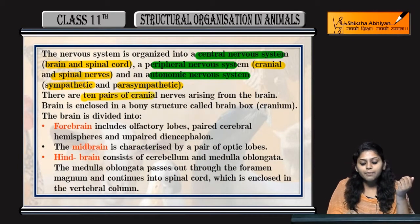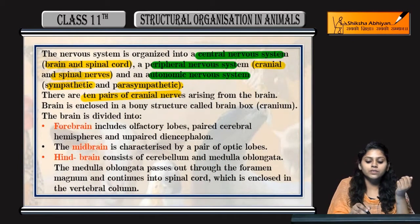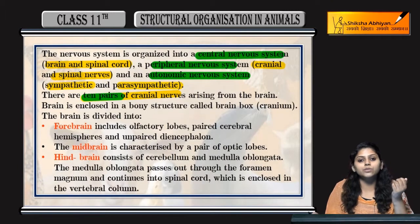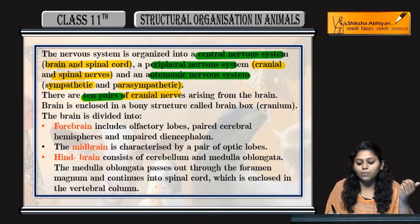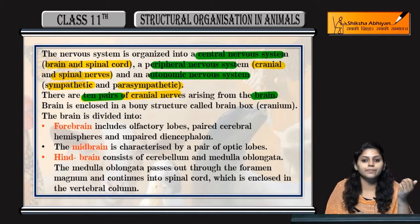There are 10 pairs of cranial nerves. Cranial nerves के 10 pairs होती हैं, they arise from brain.